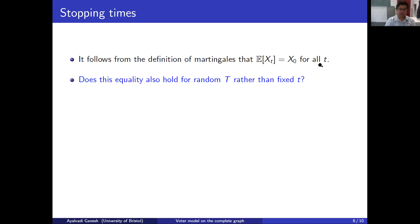We can ask: does this equality also hold for random time T rather than fixed t? Maybe I decide to stop gambling when I reach a target value — I go into the casino with 50 pounds and I'm going to stop gambling when I've made 1000 pounds. Of course, I might also reach zero pounds and be forced to stop. I'll keep playing until my fortune either reaches zero or 1000, and that happens at a random time. Is it true that at this random time, my expected fortune is the same as what I started with?